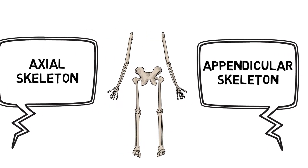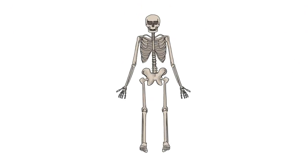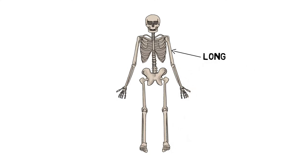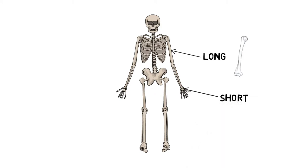Altogether we have a total of 206 bones throughout our body, which are made up of five different types of bones. Long bones have a cylinder-type shaft with widened ends, such as the humerus or femur. Short bones are cube-shaped and similar in length and width, such as carpals in our hands or tarsals in our feet.